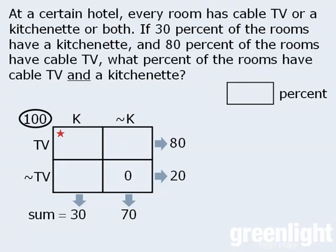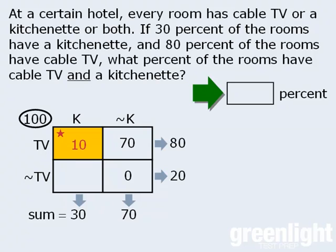At this point, we're almost done. We can conclude that since these two boxes must add to 70, this box must contain 70 rooms. We can also conclude that since these two boxes must add to 80, this box must contain 10 rooms. Our goal is to find the number of rooms with cable TV and a kitchenette — we can now see that 10 of the 100 rooms meet those criteria. So we can enter our answer of 10%.